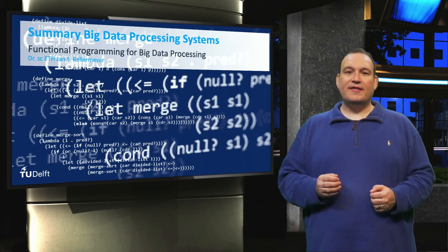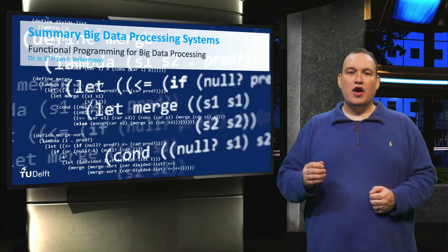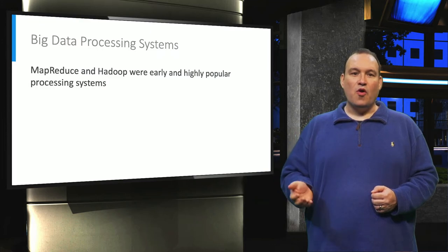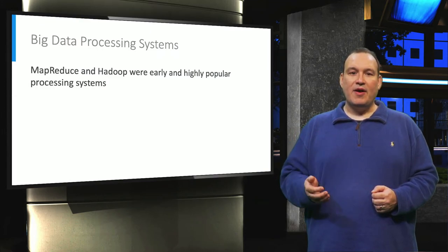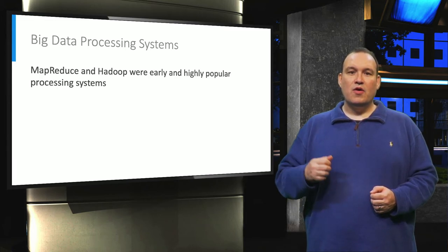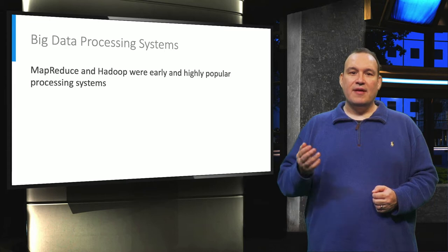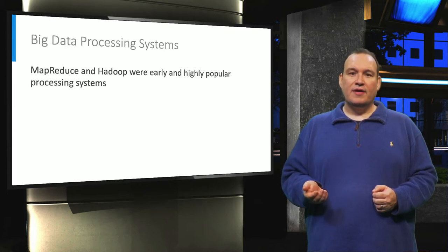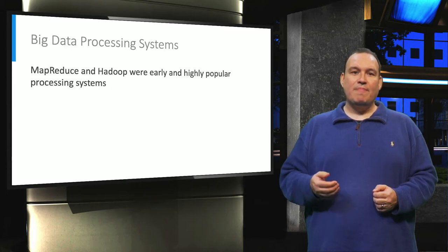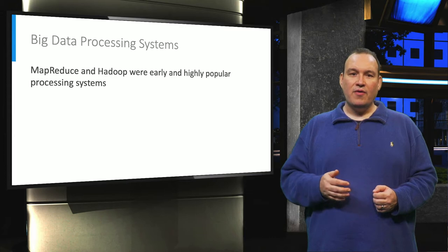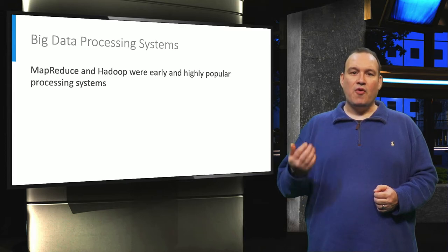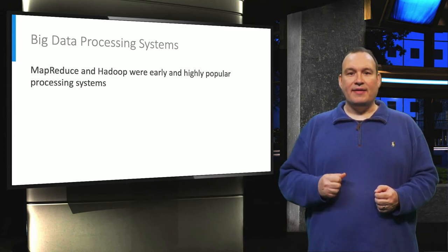This week we discussed big data processing systems. We looked into the origins of MapReduce and Hadoop and saw how they were inspired by functional programming. We discussed how these systems use two primitives, mapping and aggregation, to separate the parallelizable portion of the user code from the portion that has high data dependencies.